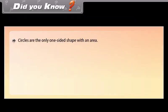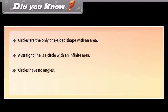Did you know? Circles are the only one-sided shape with an area. A straight line is a circle with infinite radius. Circles have no angles. A circle has an infinite number of lines of symmetry.